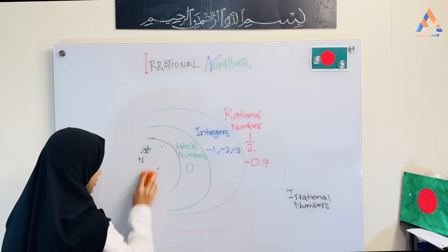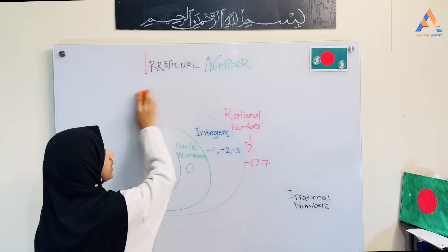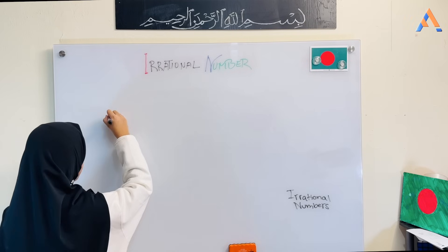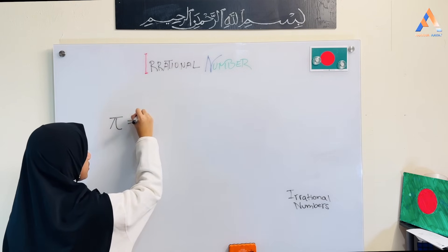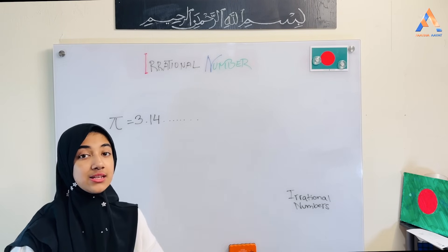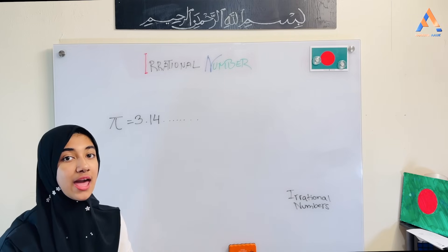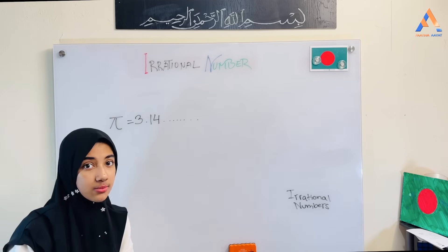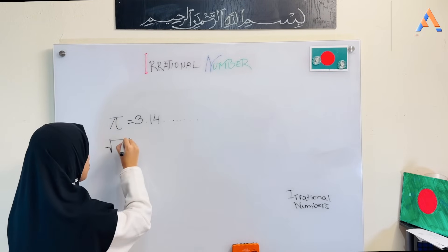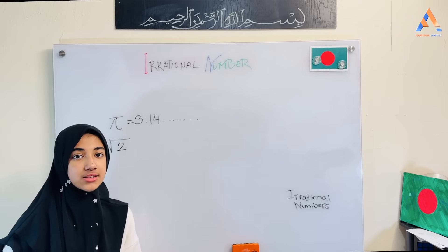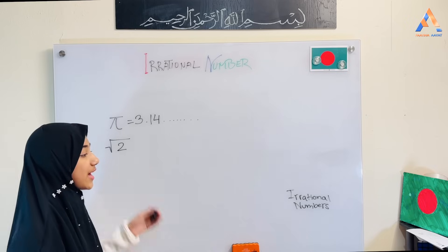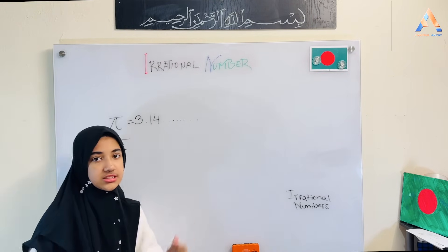Let me show you the irrational number. For example, pi: 3.14 and then it goes on forever. Any recurring or terminating decimal is a rational number, but pi is neither terminating nor recurring — it is an irrational number. Similarly, root 2 is neither terminating nor recurring, so root 2 is also an irrational number. So any decimal that is non-terminating and non-recurring is an irrational number.